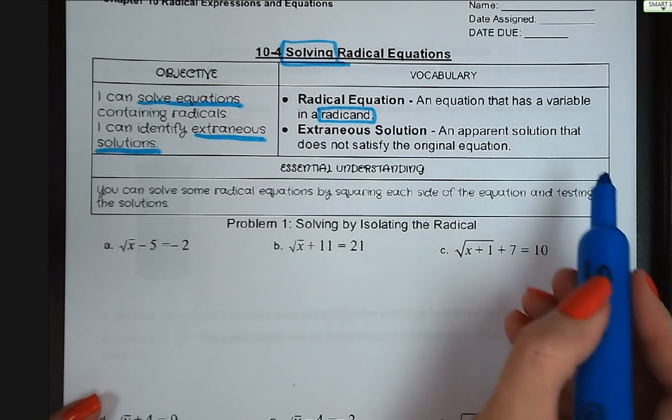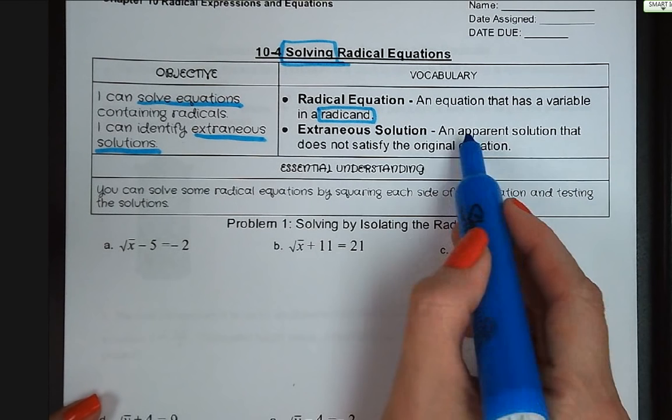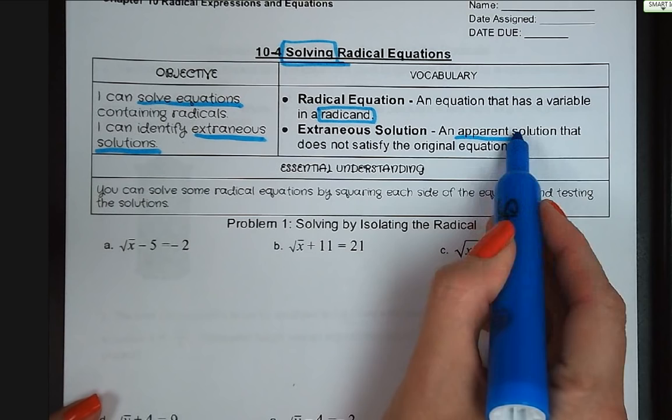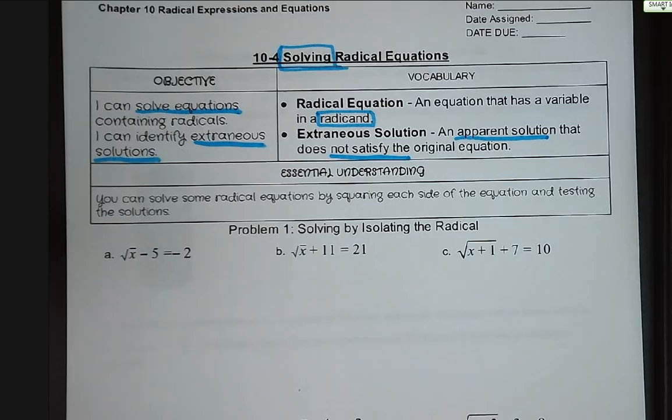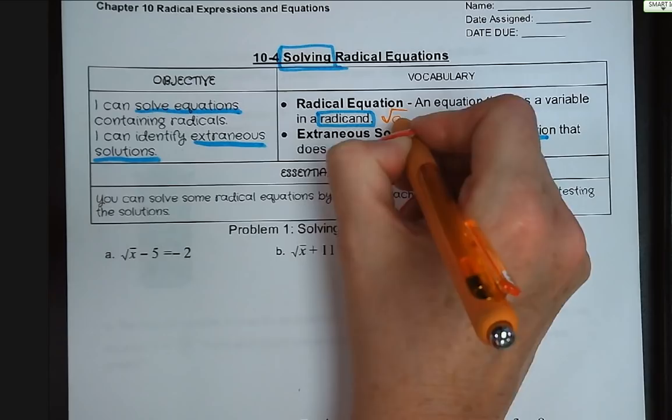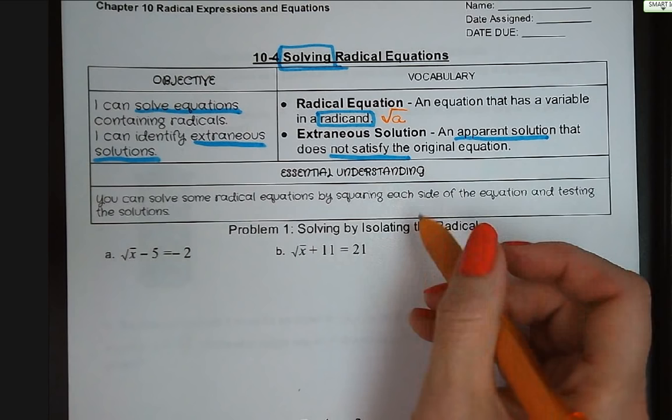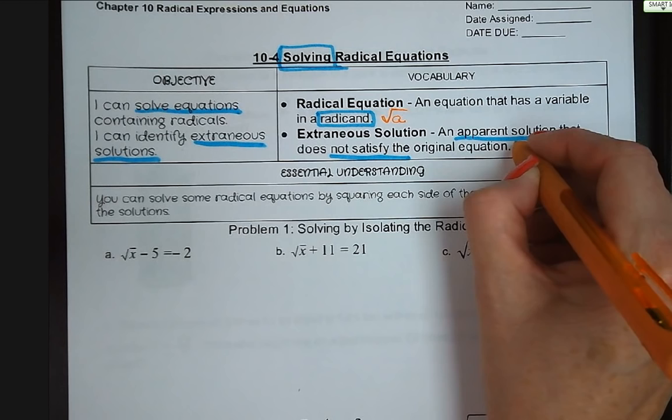Welcome to lesson 10 for solving radical equations. Our objective for today is that I can solve equations containing radicals and that I can identify extraneous solutions. A radical equation is an equation that has a variable in the radicand — a variable underneath a radical symbol, like the square root of a. An extraneous solution is an apparent solution that does not satisfy the original equation, so we'll need to substitute and check our work.